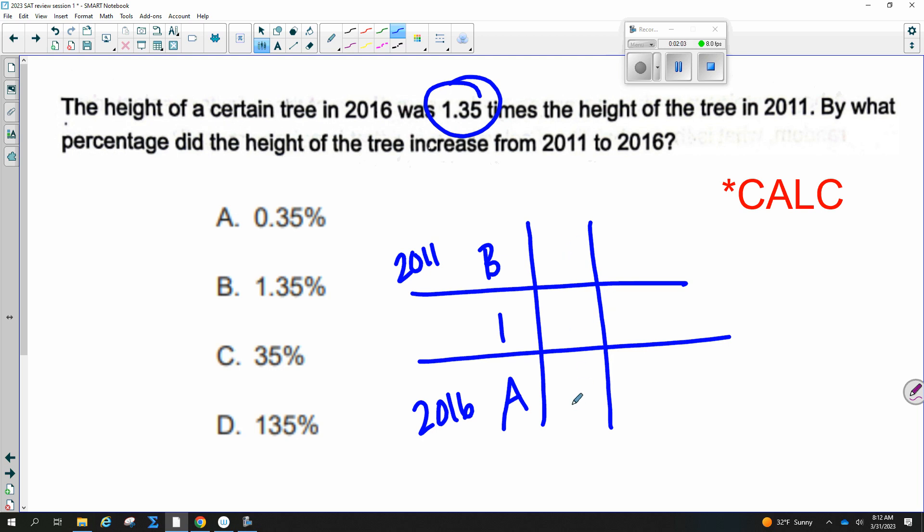So if this was 1.35 times the initial height, this would be 1.35 and this would be 1. Or we could do this as a percentage. So 135, 100%. And so my increase would be that 35%. And so what percent did it increase by? Just 35%.